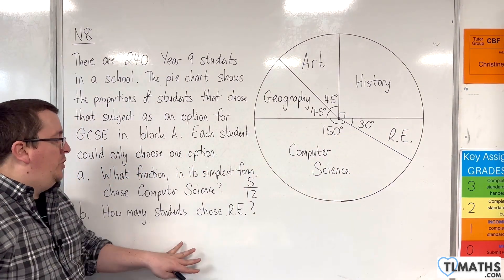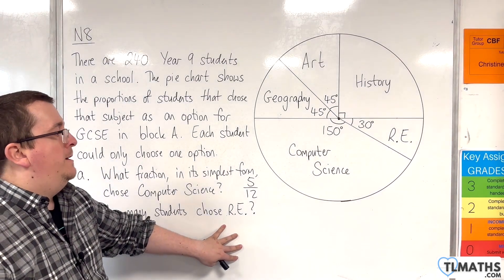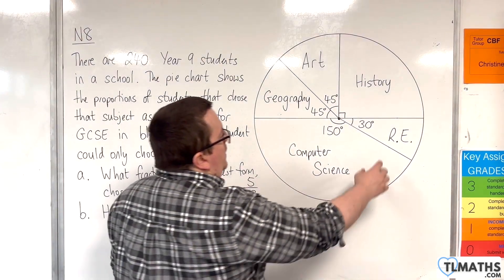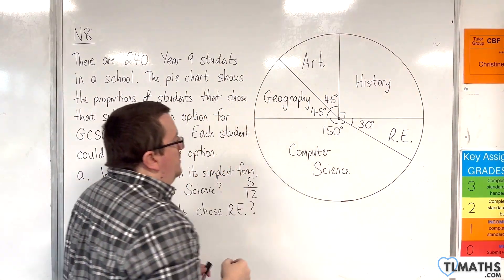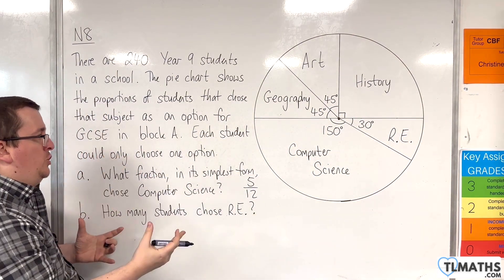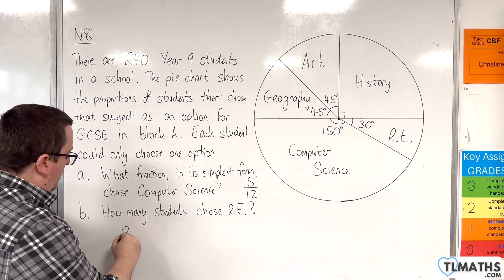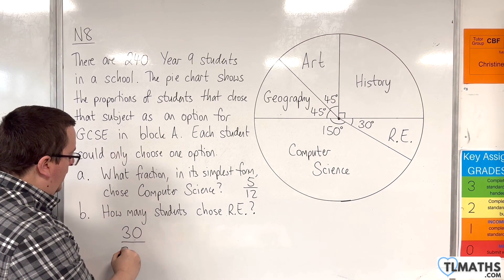Part B, how many students chose RE? Here we have 30 degrees. We can take a look at the fraction first. We've got 30 degrees over 360.